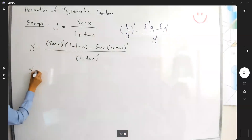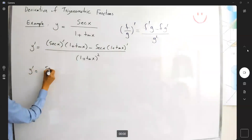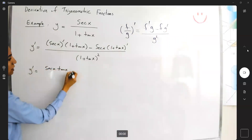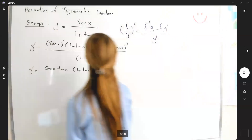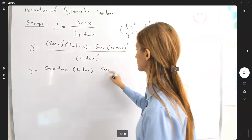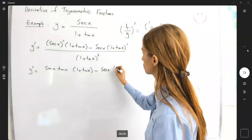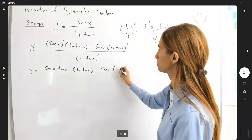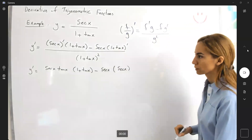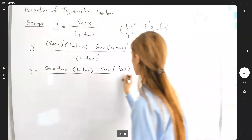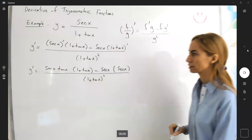y prime of x is equal to — recalling that the derivative of secant is secant tangent — secant of x times tangent of x times 1 plus tangent of x, minus secant of x times the derivative of 1 plus tangent of x. The derivative of 1 is 0, and the derivative of tangent is secant squared of x. Everything is divided by 1 plus tangent of x to the second power.